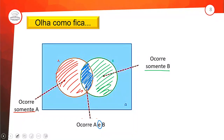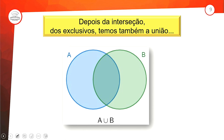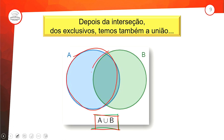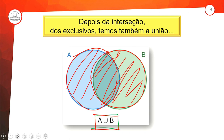Depois da interseção e dos exclusivos, temos também a união — nosso símbolo U. A união faz a junção de tudo: traz o que tem em A ou o que tem em B. A gente tem os elementos de A, os elementos de B, e a união junta todos os elementos. Quando a gente junta tudo, não há necessidade de repetir elementos.